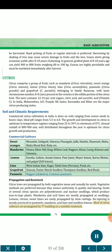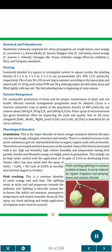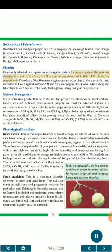Rootstocks commonly employed for citrus propagation are rough lemon, sour orange (C. aurantium L.), Karna Khatta (C. karna), Rangpur lime (C. reticulata), sweet orange (C. sinensis L. Osbeck), citrangers like Troyer, trifoliate orange (Poncirus trifoliata L. Raf.), and Cleopatra mandarin. Planting: Commonly planted in square or rectangular system. In square system, planting density of 4×4 m, 5×5 m, or 3×3 m can accommodate 625, 400 or 1111 plants per hectare respectively. Pits of size 50×50 cm are dug in summer, mixed with 15 to 20 kg well-rotten FYM and 50 g chlorpyrifos to kill white ants, and filled tightly with topsoil. The best planting time is the beginning of the rainy season.